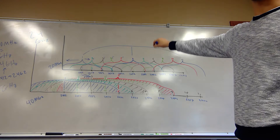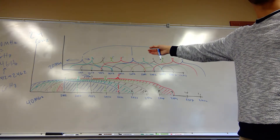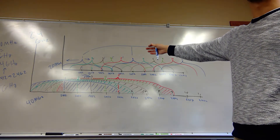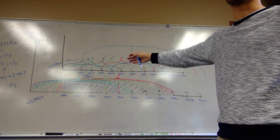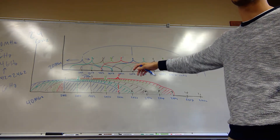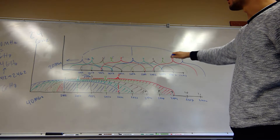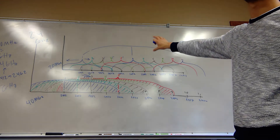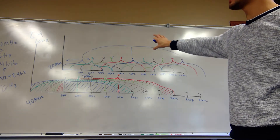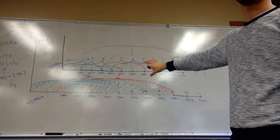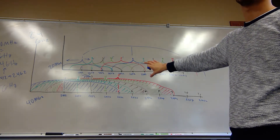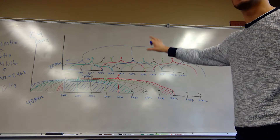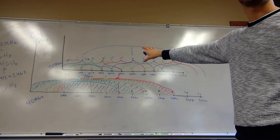To summarize: channel width — the wider the channel, the faster it can be, but the more interference you'll get. With 2.4 gigahertz you're choosing between 20 and 40 megahertz channel widths.